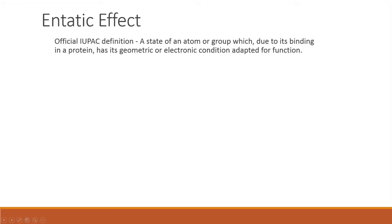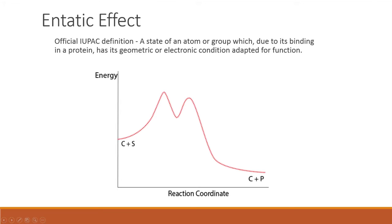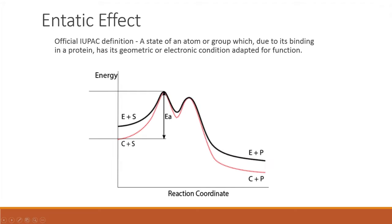We can explain this from an energetic standpoint using the following graph of energy versus reaction coordinate. The red dotted line represents the energetic pathway of regular catalyzed reactions, from starting material to end products, all in an enzyme-substrate complex. The reaction, like every other, has an activation energy barrier that must be overcome to push it forward. The new black line represents the energy profile of a reaction catalyzed by an enzyme with the entatic effect in play.